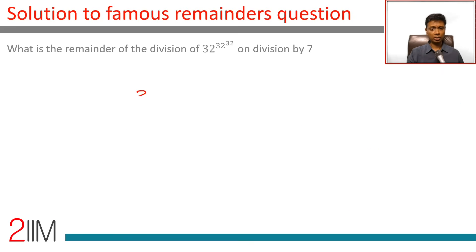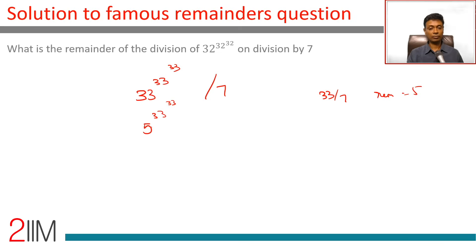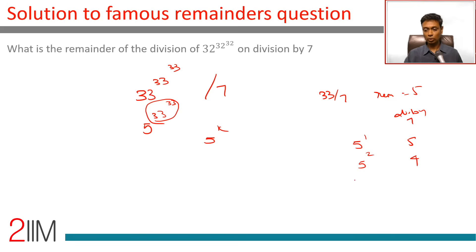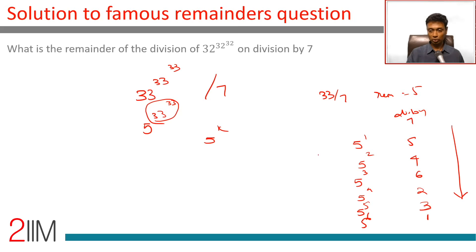Imagine we were doing 33 power 33 power 33 divided by 7. First: 33 divided by 7 gives remainder 5, so this simplifies to 5 power 33 power 33. Forget 33 power 33 for now — call it 5 power k. 5 power 1 mod 7 = 5; 5 squared = 25, remainder 4; 5 cubed: 4×5=20, remainder 6; 5 power 4: 6×5=30, remainder 2; 5 power 5: 2×5=10, remainder 3; 5 power 6: 3×5=15, remainder 1. So we have a cycle of length 6.